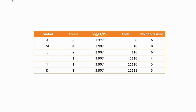The value P represents the probability of occurrence of a symbol. The probability of symbol A is its count divided by the total number of characters in the string, that is 6 divided by 15. The log(1/P) to base 2 indicates the amount of information held by the symbol. For symbol A, this value is 1.322.